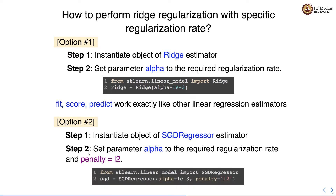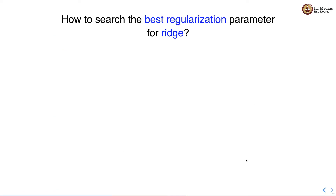As a second option, you can instantiate an object of the SGDRegressor estimator. In the SGDRegressor estimator, we set penalty to l2 and also set the parameter alpha to the required regularization rate.